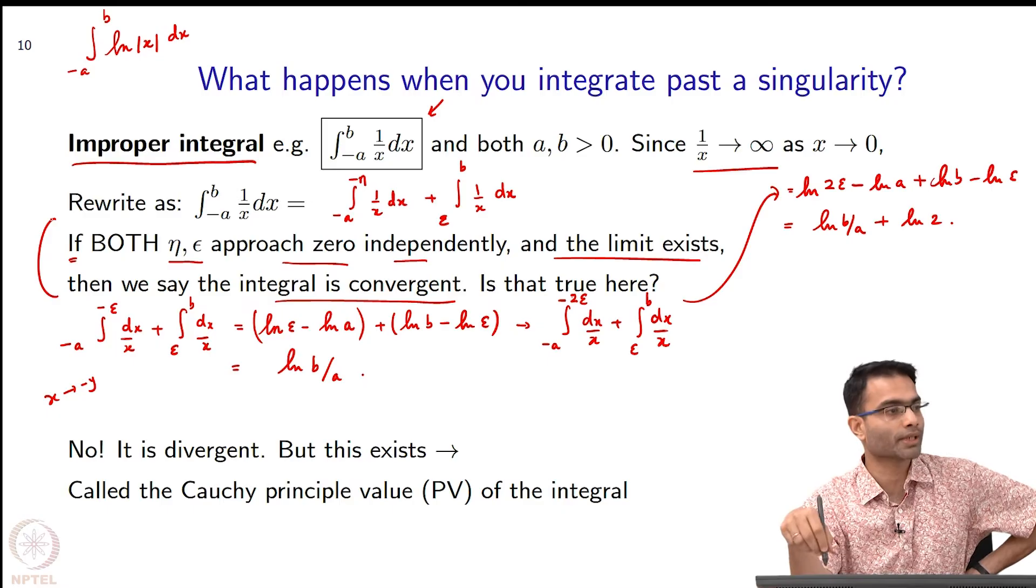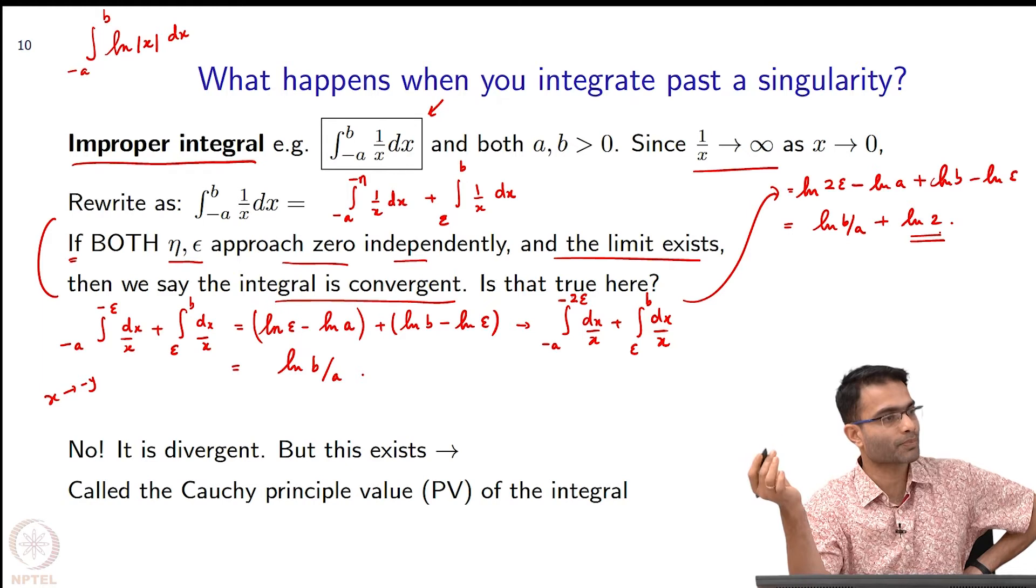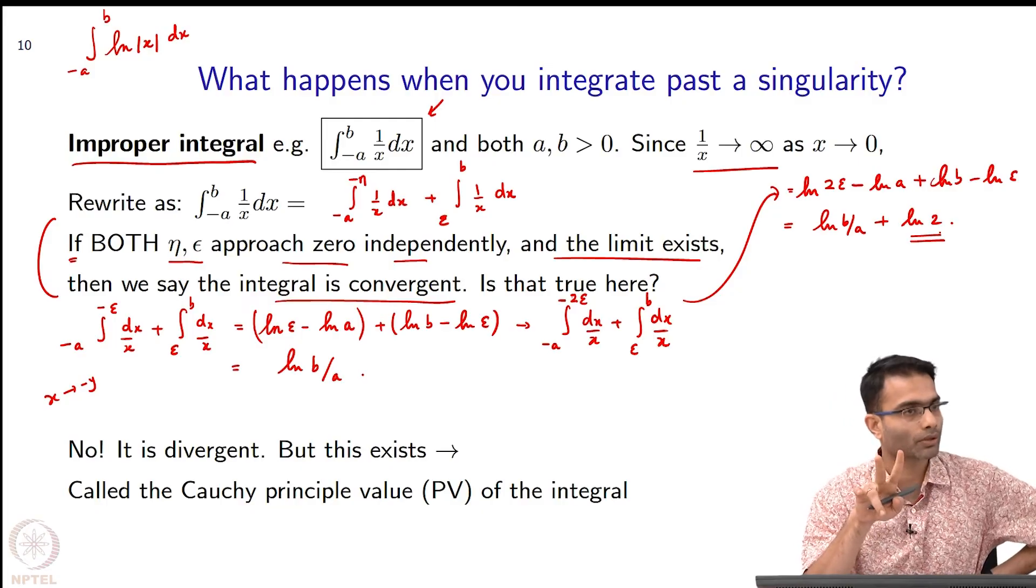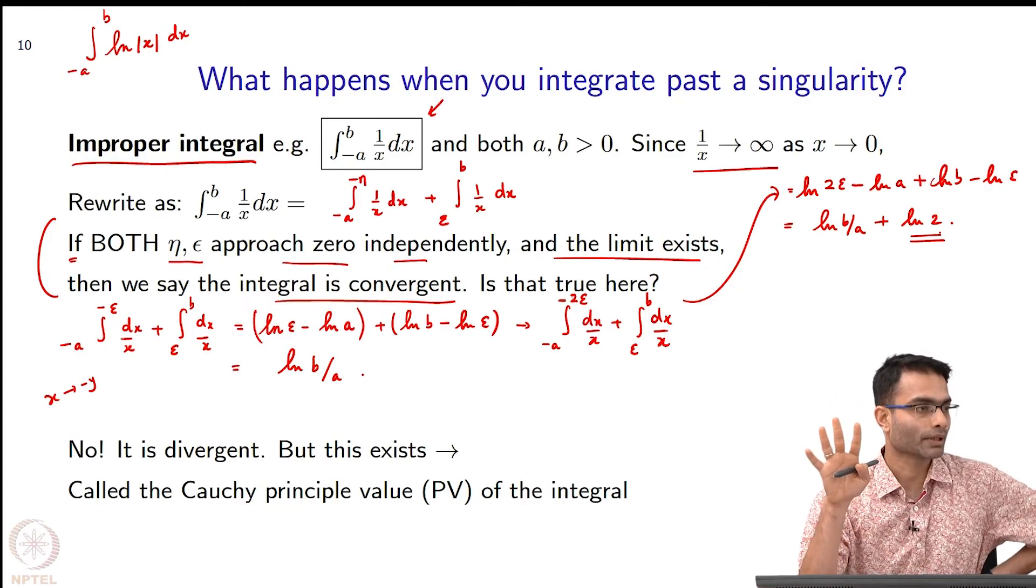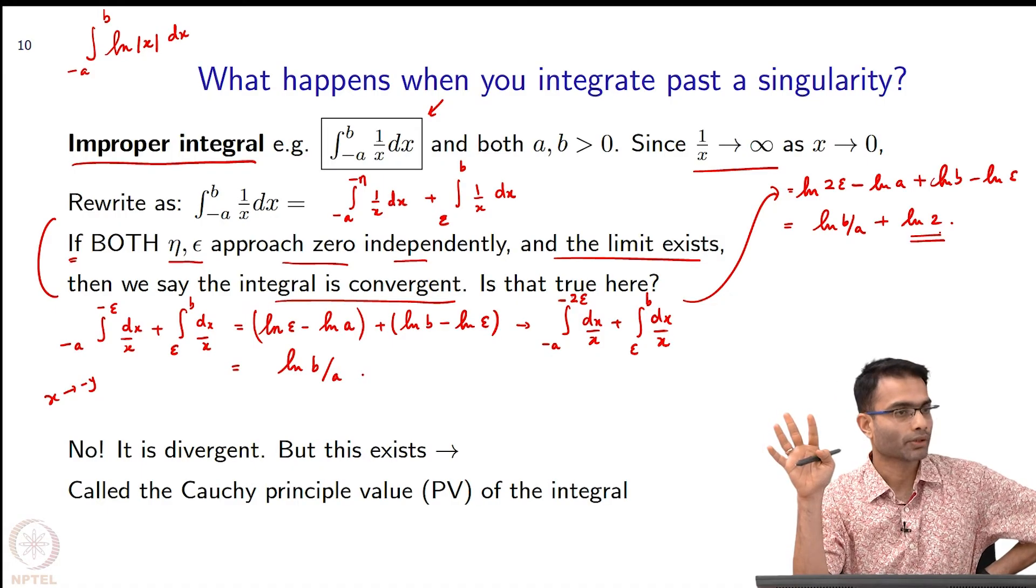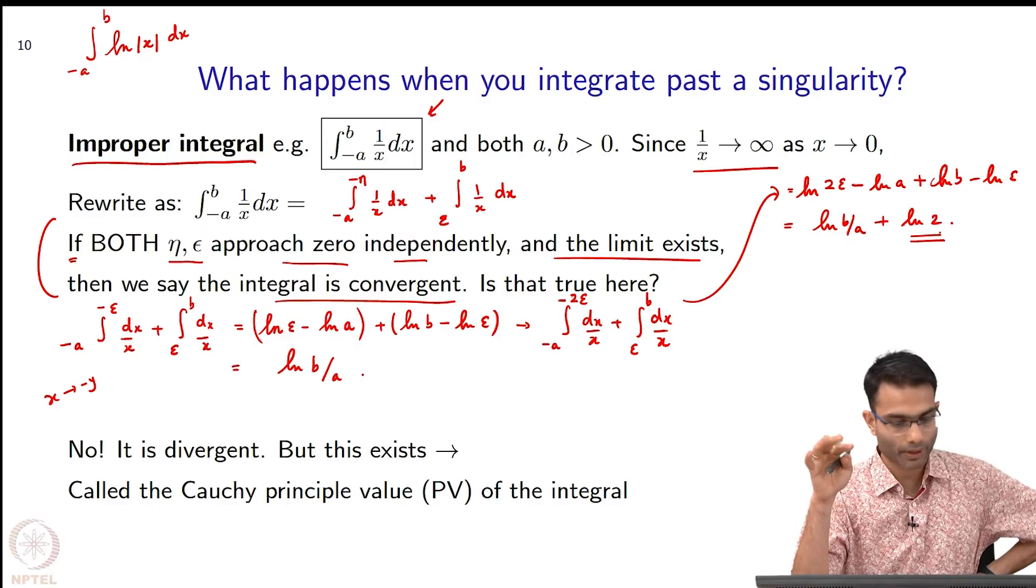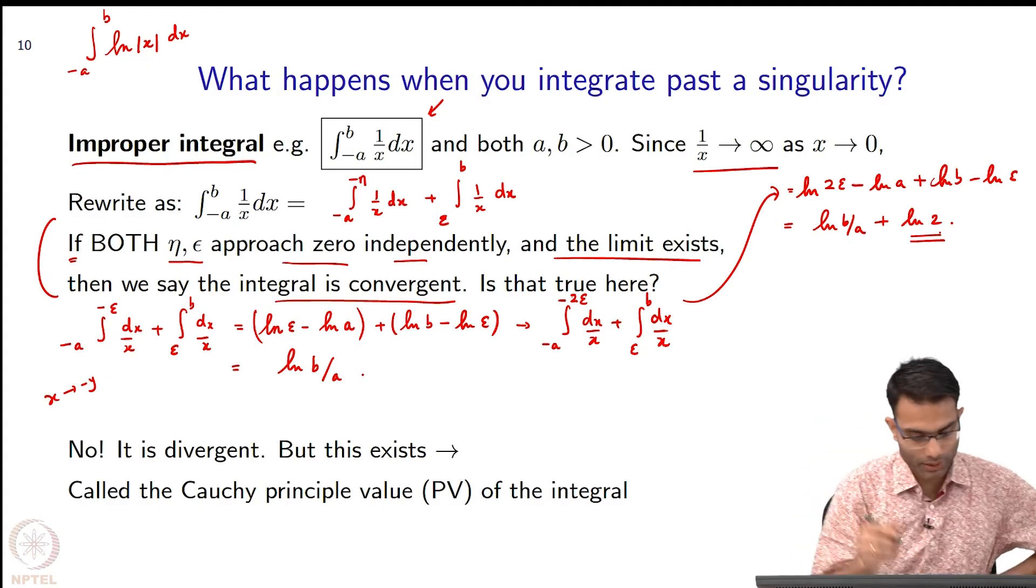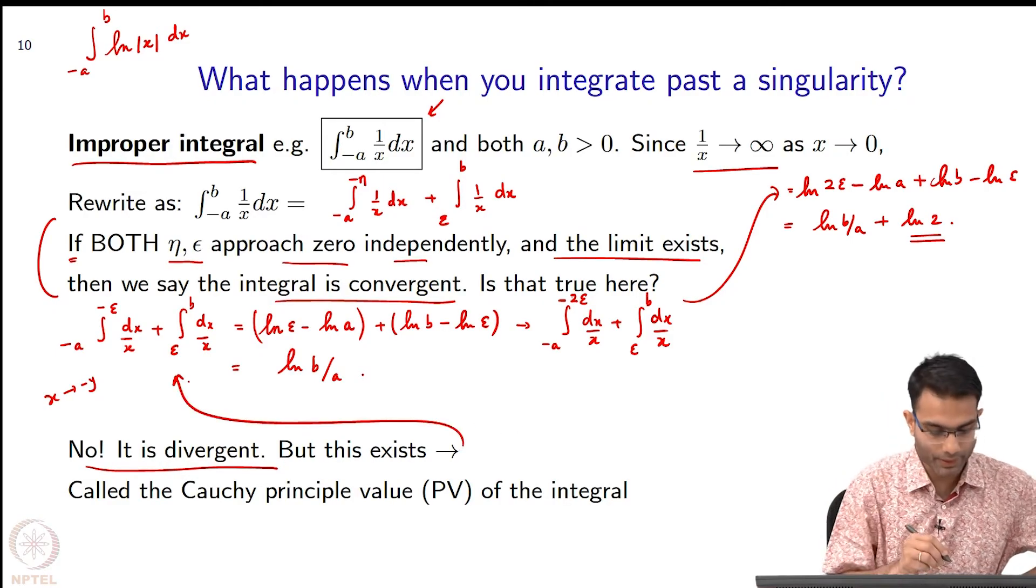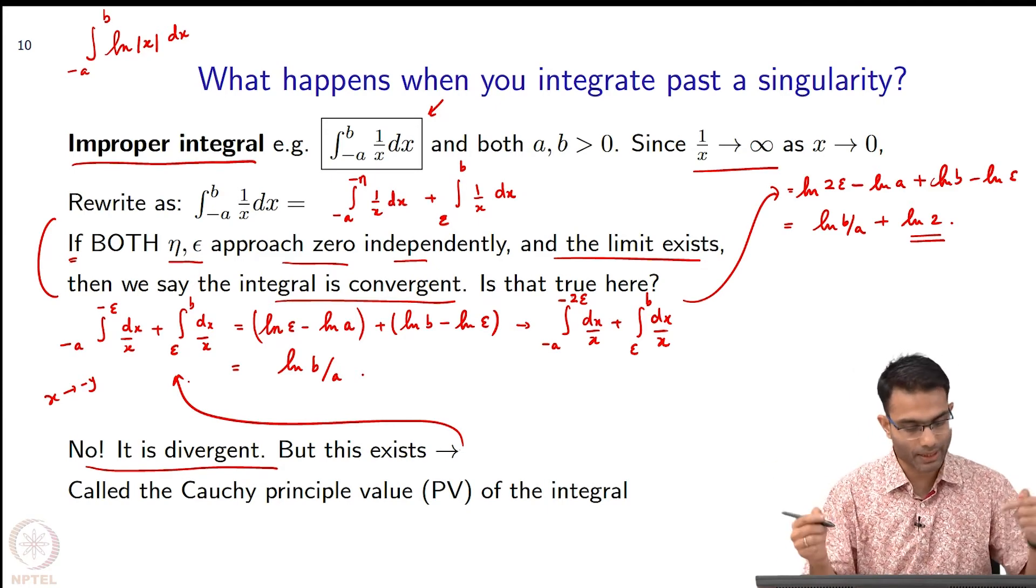We saw that if these two are approaching at different rates, then you got this funny log 2 appearing. Similarly, if I made it 3 epsilon I will get a log 3. This limit itself is not existing as both eta and epsilon are approaching independently. This is the definition of a divergent integral. You can try it out for the other case, log of x - you will find out that it is convergent and there is no problem. But 1 by x has this problem, therefore it is a divergent integral.